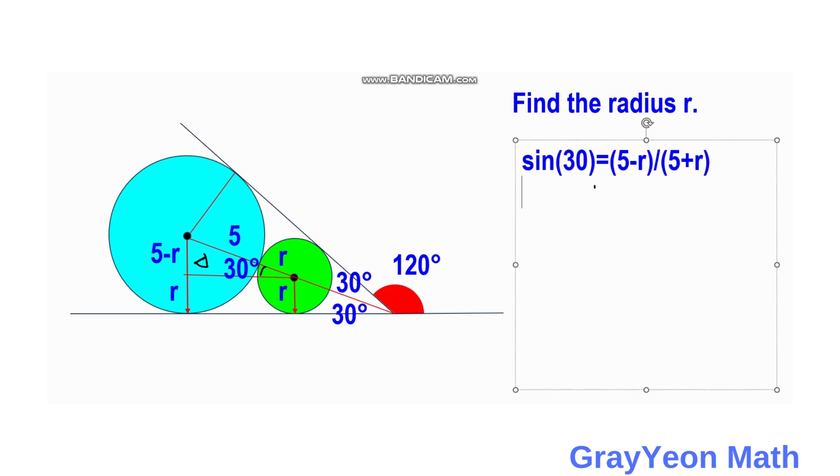Since the value of sine of 30 is equal to one-half, we have one-half equals 5 minus R over 5 plus R.